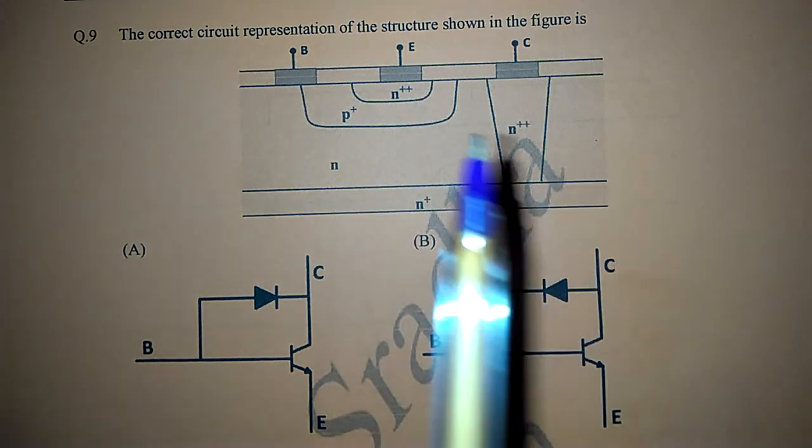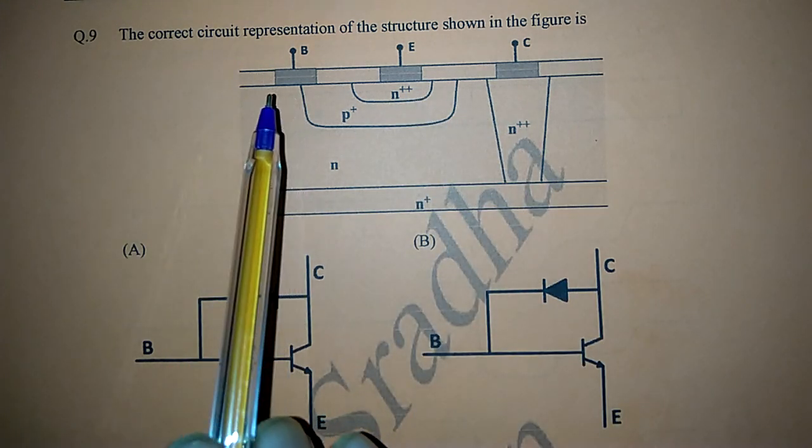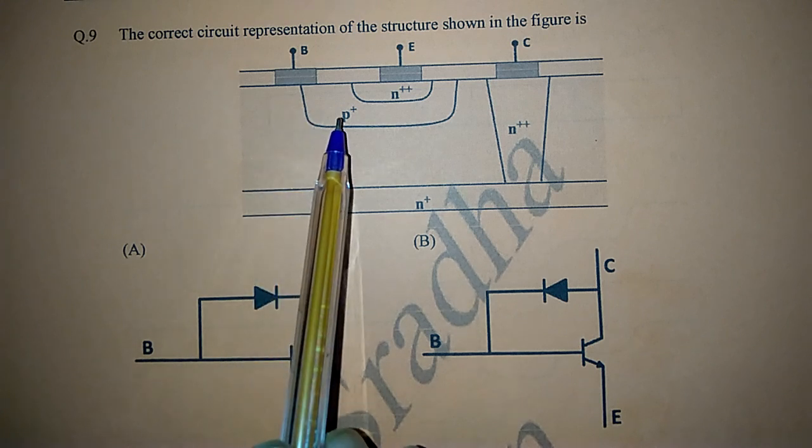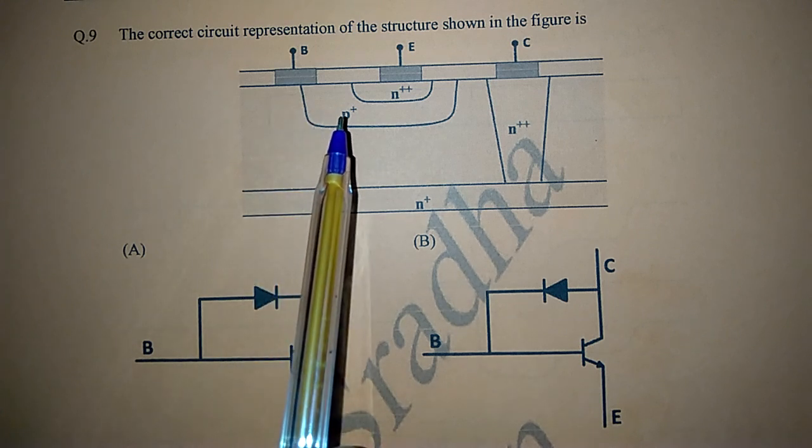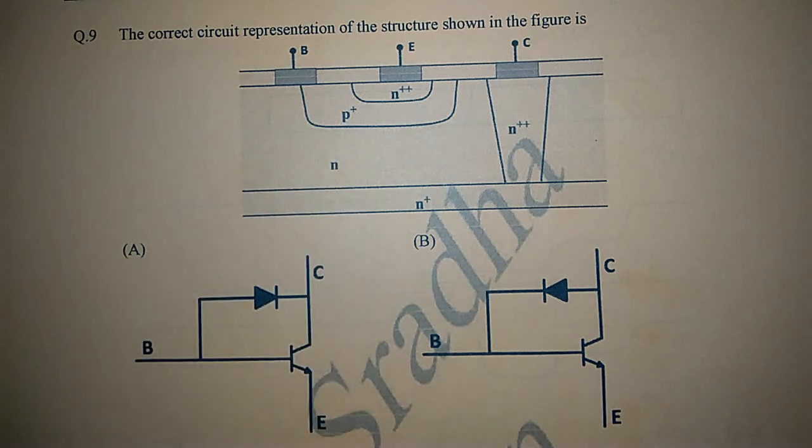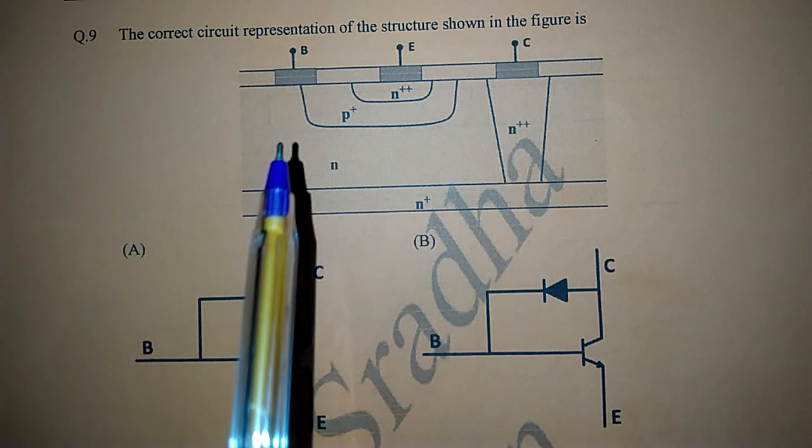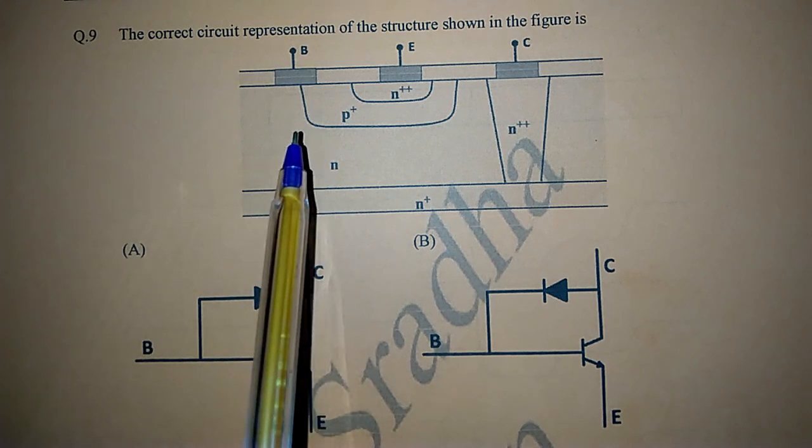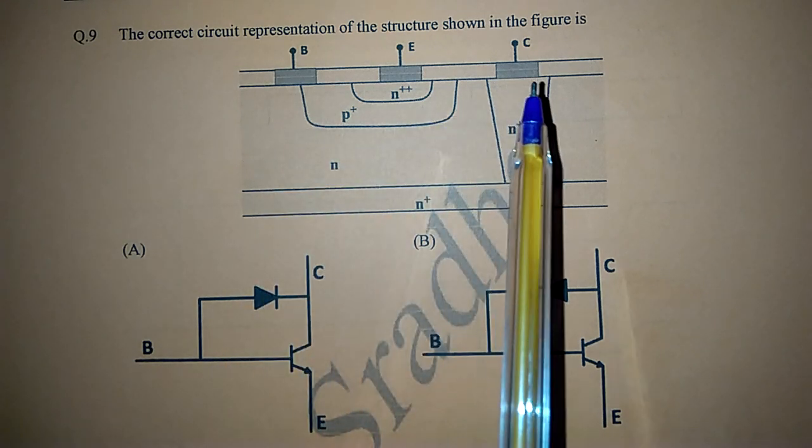Next, in the case of B, that means base, P+ is there - that means highly doped P-type material. So we have to connect P-type material to the ordinary base of BJT. Next thing, in the case of collector...